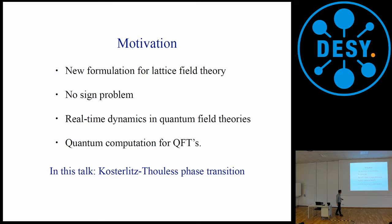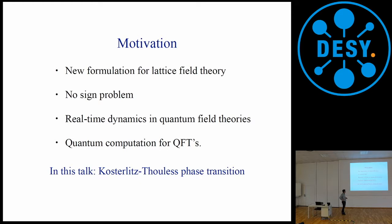The motivation for us to follow this strategy is that it's something new to lattice field theorists, and doing something new is always very interesting and exciting. Also, by dealing with the Hamiltonian formalism, and especially dealing with the operators, we don't have to face the sign problem — at least that's our naive expectation. And we could actually use this Hamiltonian formalism to try to obtain some information about real-time dynamics in quantum field theories, which the path integral formalism cannot easily give you. This kind of formalism also sets the same tune as quantum computations for future quantum field theory calculations.